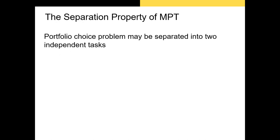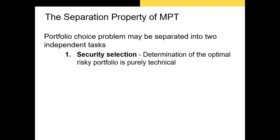There are two steps to Modern Portfolio Theory: security selection and asset allocation. The first step, security selection, involves estimating expected returns and standard deviation, and then finding the ideal weights of each risky security in our portfolio. When people normally think of Modern Portfolio Theory, they're usually thinking of the security selection step.